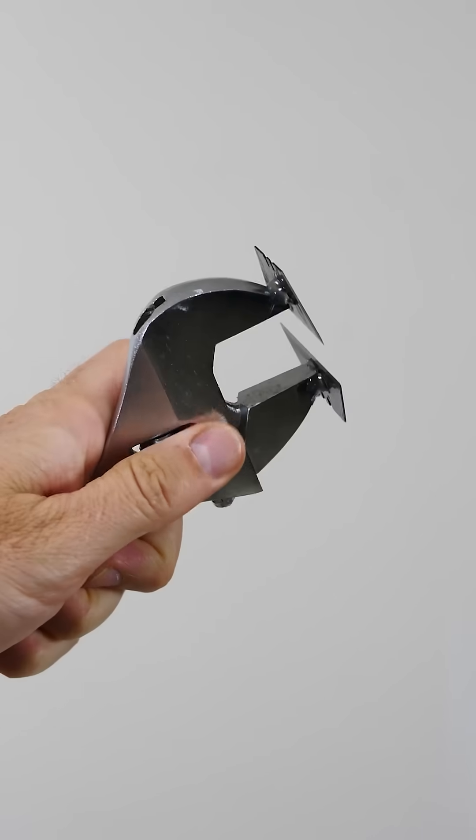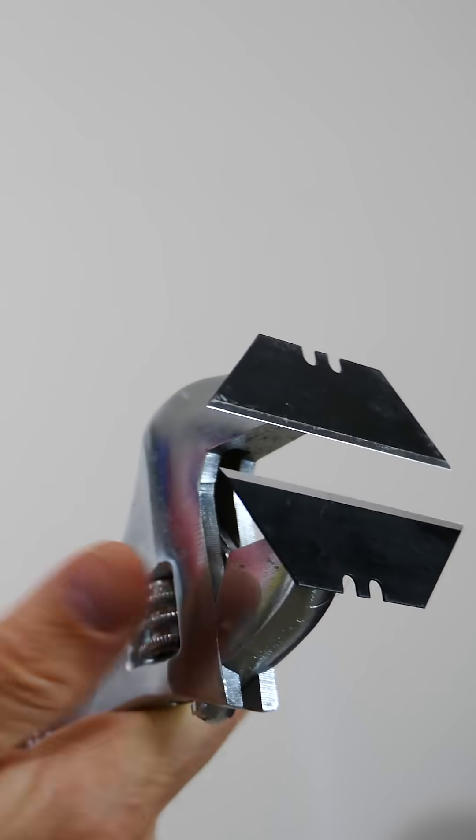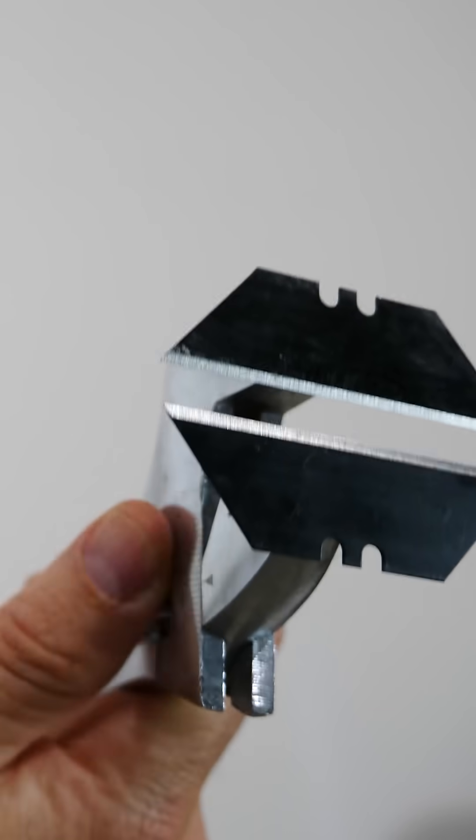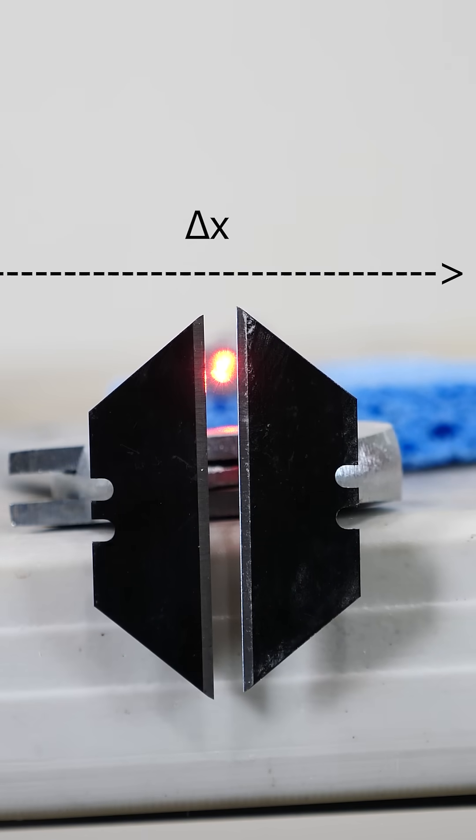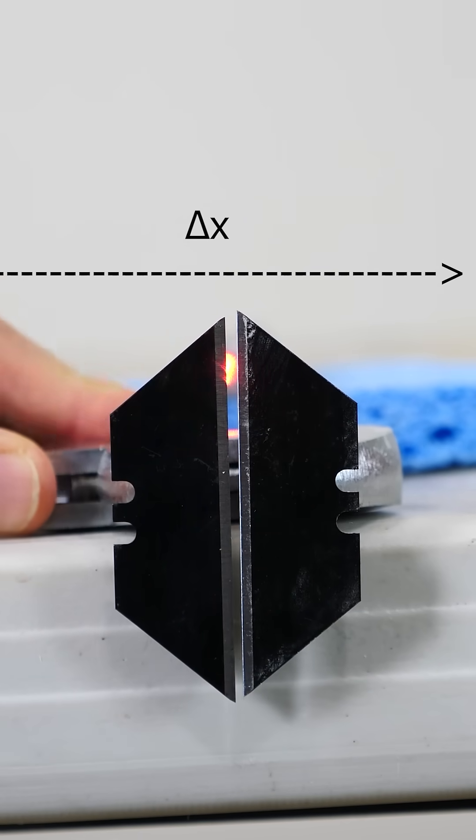If you put two razor blades on the end of a wrench, you can make a torture device, but a better use of it is to show Heisenberg's uncertainty principle. If I shine a laser through the gap here and then look at the spot on the wall, you'll see something interesting when I change the gap width.